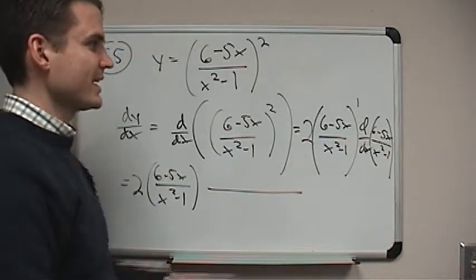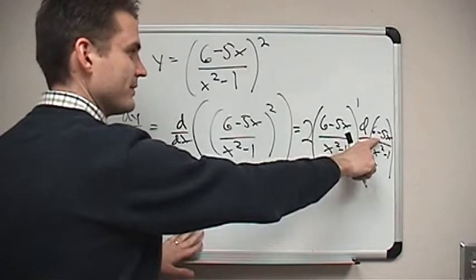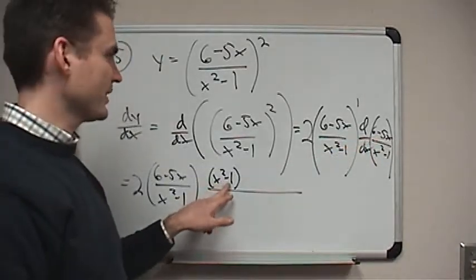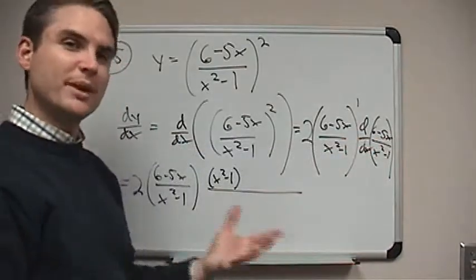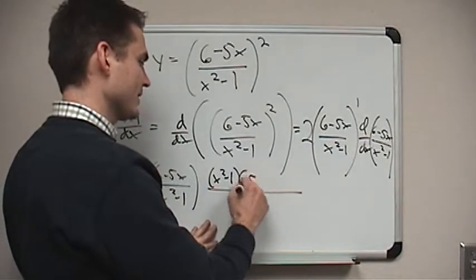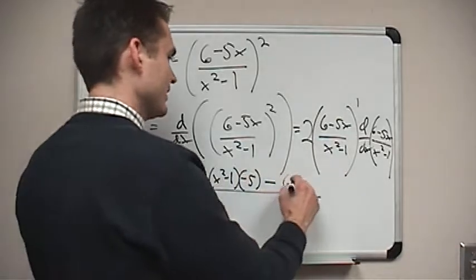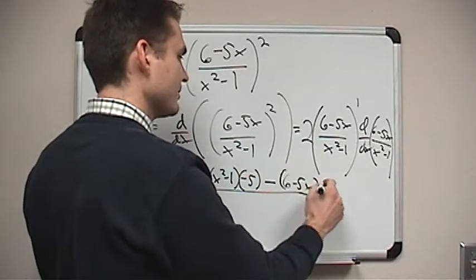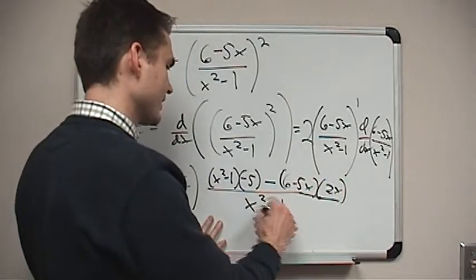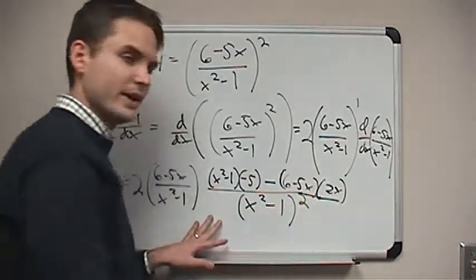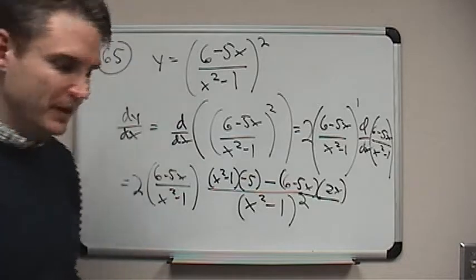Okay, the quotient rule says take the denominator times the derivative of the numerator. So I've got the denominator x squared minus 1. The derivative of the numerator, 6 minus 5x, is just going to be minus 5. Okay, and then I subtract from that the numerator, 6 minus 5x, times the derivative of the denominator, which is 2x. Okay, and this is all over x squared minus 1 squared, because in the quotient rule, you divide by the old denominator squared.